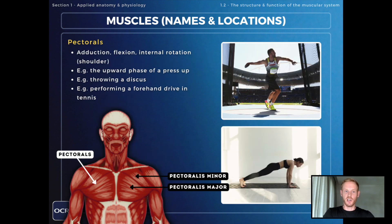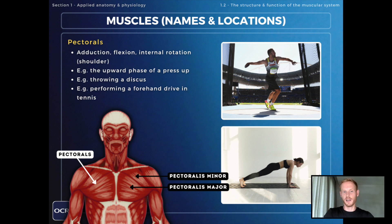The pectorals are the chest muscles and they're involved in adduction, flexion and internal rotation at the shoulder. To keep it simple, pectorals are involved in pushing movements like the upward phase of a press-up and drawing the arm across the body, like when throwing a discus or performing a forehand drive in tennis.